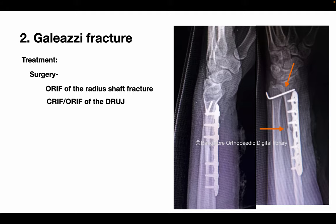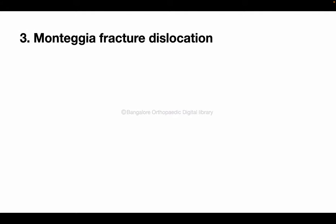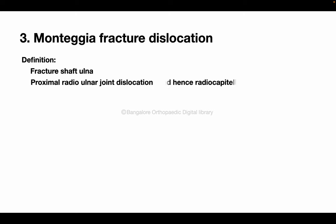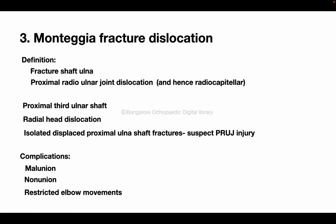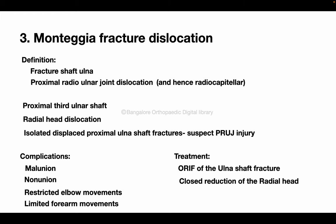Monteggia fracture dislocation is where there is a fracture of the shaft of the ulna and proximal radio-ulnar joint dislocation. Since the radial head also articulates with the capitulum, the proximal radio-ulnar joint dislocation manifests as a radiocapitular dislocation as well. In an isolated proximal ulnar shaft fracture, radial head dislocation should be actively looked for. Complications include malunion, nonunion, and restricted elbow and forearm range of movements. Treatment is open reduction internal fixation with plates and screws; the radial head usually reduces itself or may need closed or open reduction.